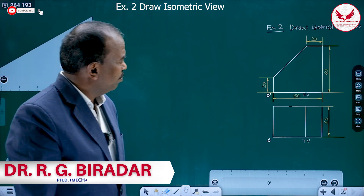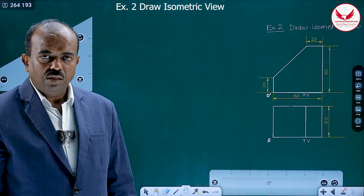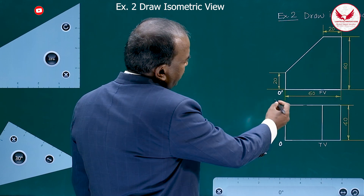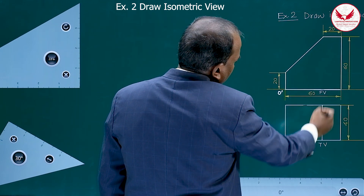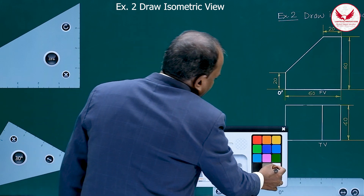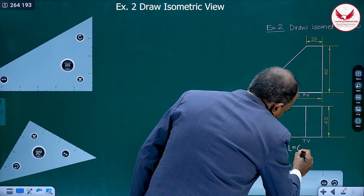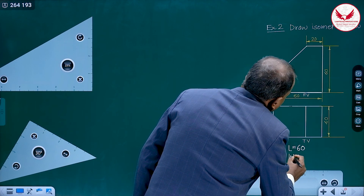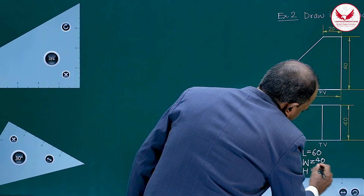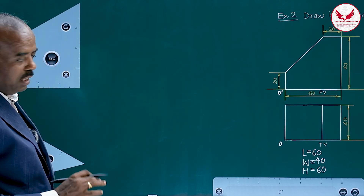Hello friends. Now we will see one more very simple example of isometric view where we will study how to draw a non-isometric line in isometric view. For that purpose I have taken this example: length of this object is 60, width is 40, and height is 60. Always you have to write the overall length, width, and height. Once we know these three things, then easily we can draw this object.